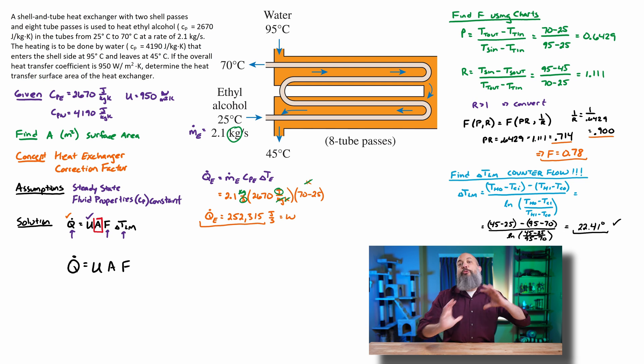So now we have all three expressions we were looking for. We can finally plug back into the original equation from the start, U*A*F*delta T_LM. So 252,000 is the rate of heat transfer. 950 was the overall heat transfer coefficient U, that was a value that was given to us.